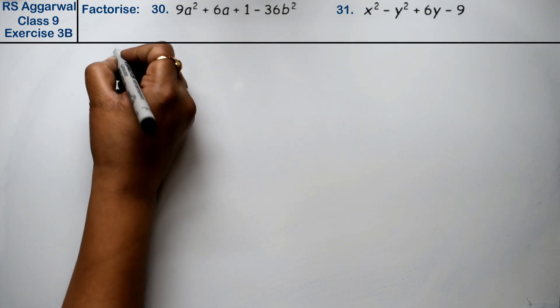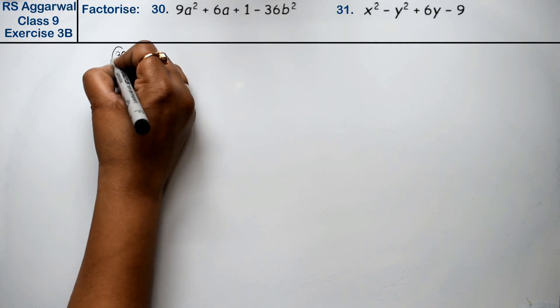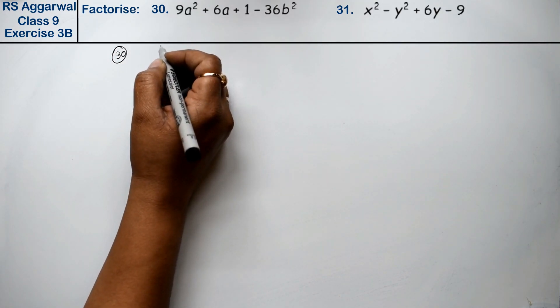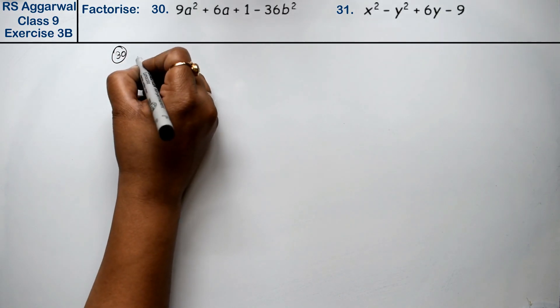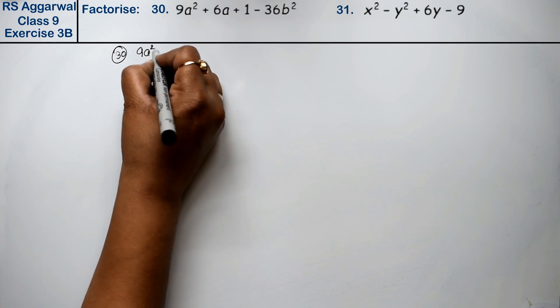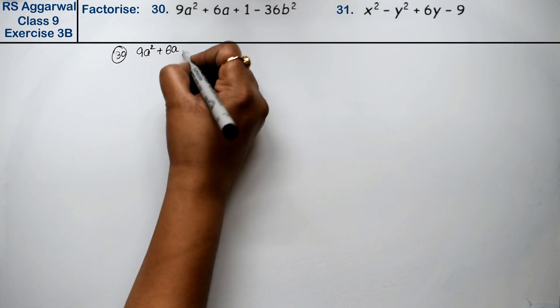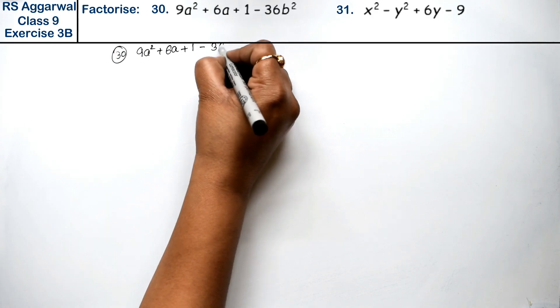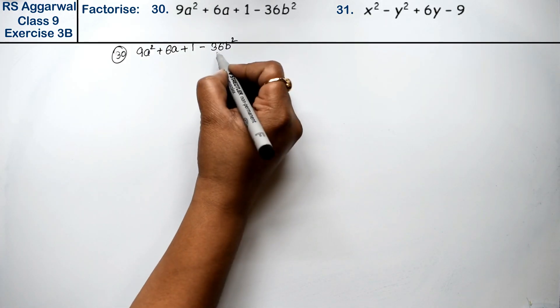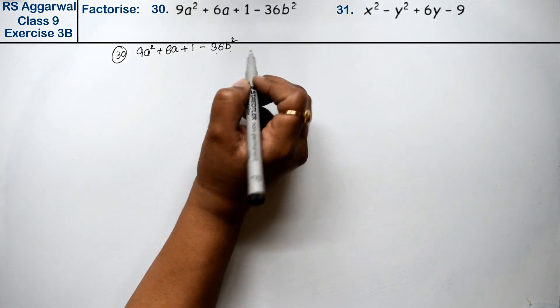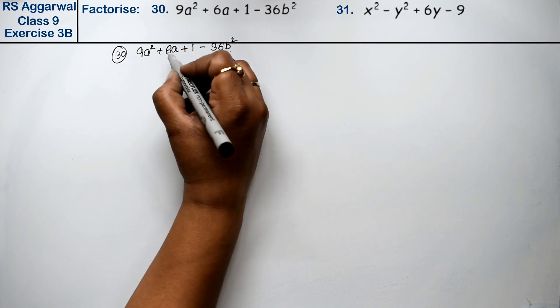Let's do question number 30 of exercise 3B, that is factorization of polynomial. Question number 30 is 9a² + 6a + 1 - 36b². This can be written as (6b)² on the right side. Now 9a²...